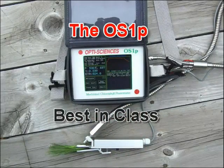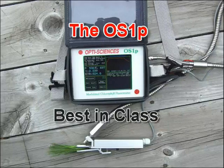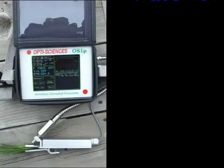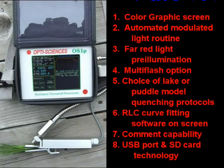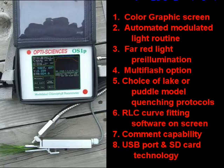The OS-1P has been field tested and proven reliable for more than one year, and it is young by product life cycle standards, so it will be around for several years before the design is changed. Its key features include the color graphic screen, automated modulated light setting routine, far-red pre-illumination option in Fv/Fm protocol, multi-flash option in quantum yield of PS2, choices for lake or puddle model quenching protocols, rapid light curve fitting software, the ability to add comments to measurements, and USB port and SD card technology — making the OS-1P the best instrument in its class.